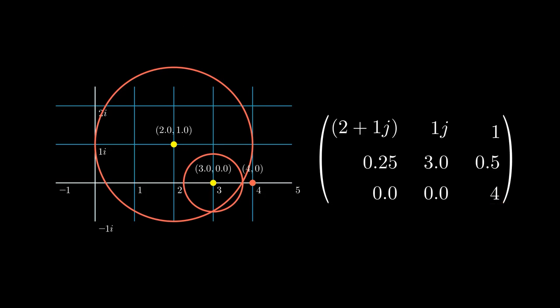Also we call the union of all Gershgorin disks, the G of A. That's all for the definition of the Gershgorin disk.